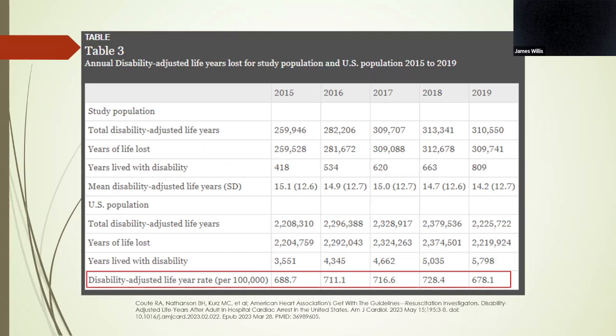For some context, disability-adjusted life years are calculated as a sum of years of life lost to disability and the years of life lost due to premature mortality. It's a way to quantify overall morbidity and mortality of a population.